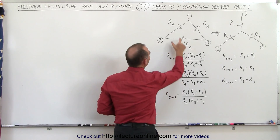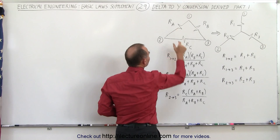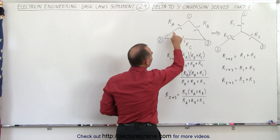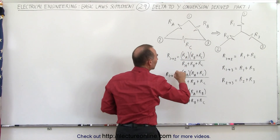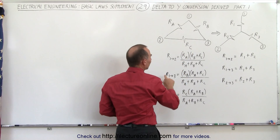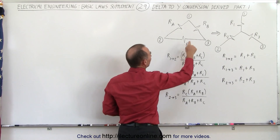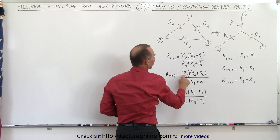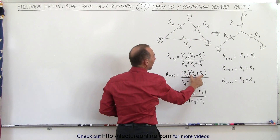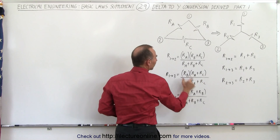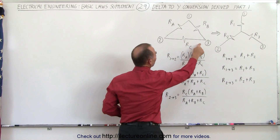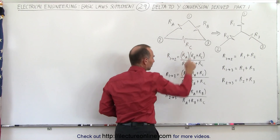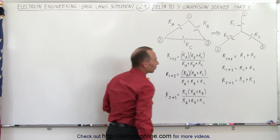For a parallel circuit we use the product over the sum. So the resistance from one to two in the delta is RA times (RB + RC), divided by (RA + RB + RC). From one to three it's RB times (RA + RC) divided by (RA + RB + RC). And between two and three it's RC times (RA + RB) divided by (RA + RB + RC).